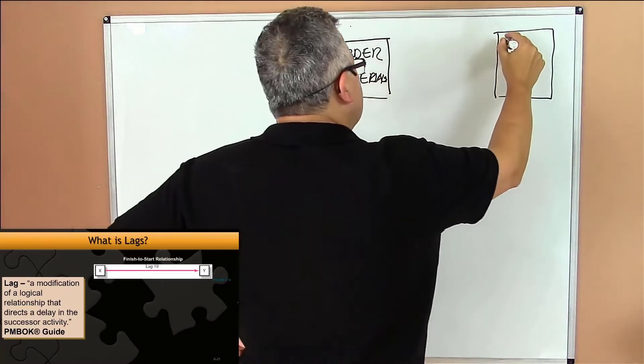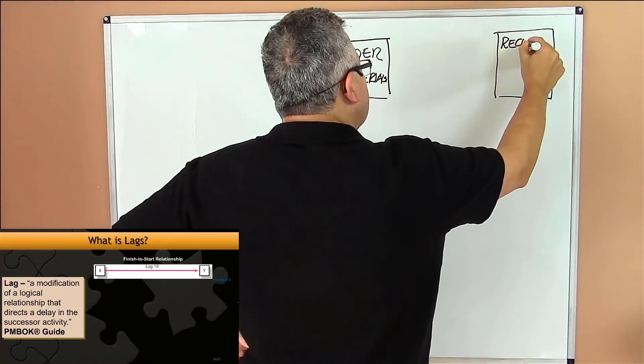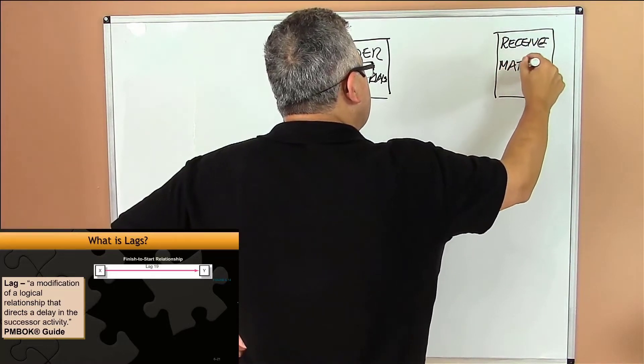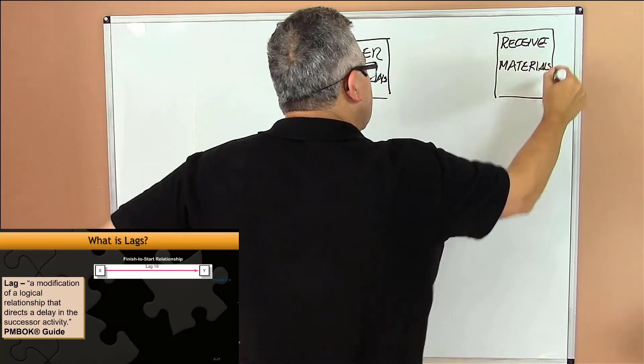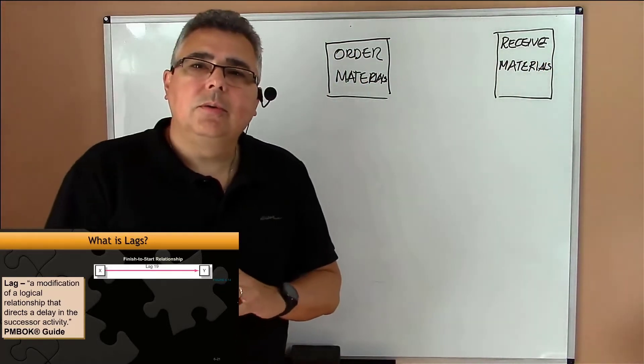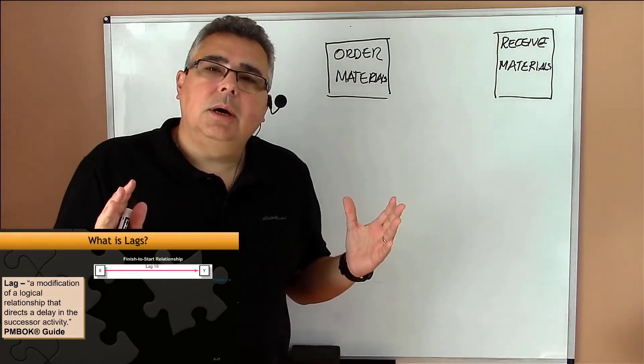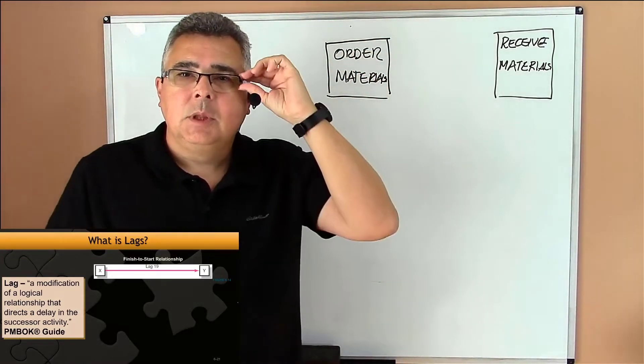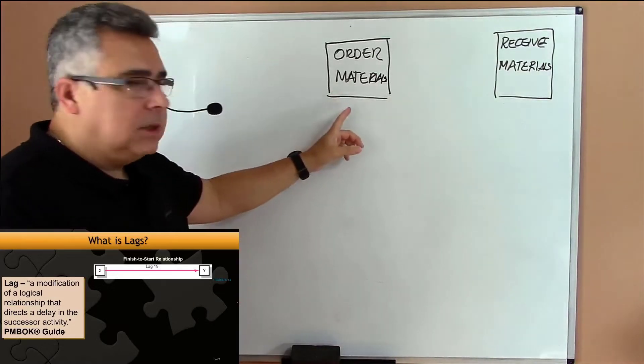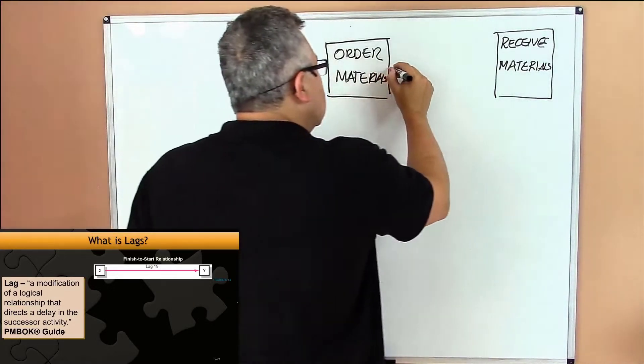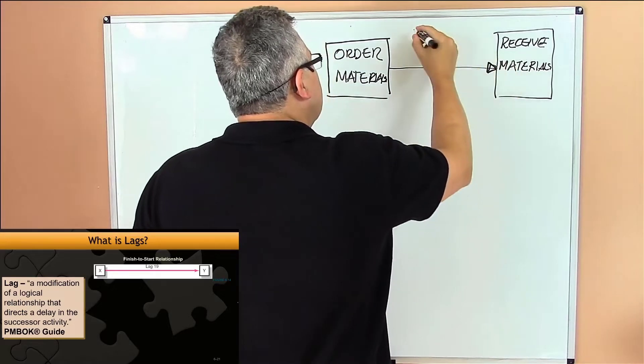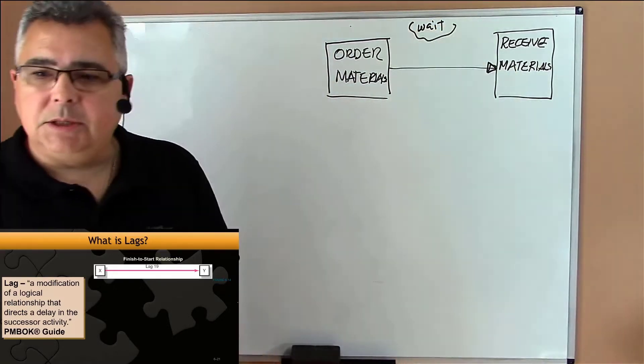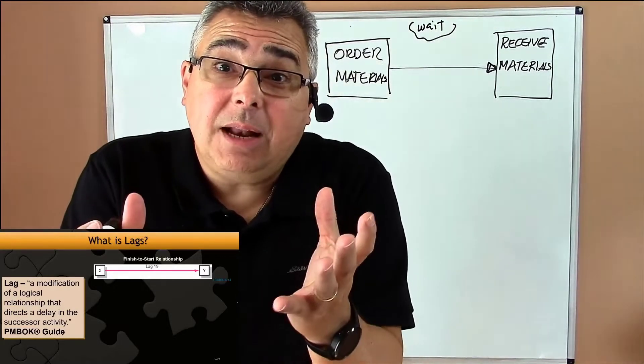And Receive Materials. You have two activities within the project network. Usually when you order materials, you have to wait some time to receive the materials. That's the reality.